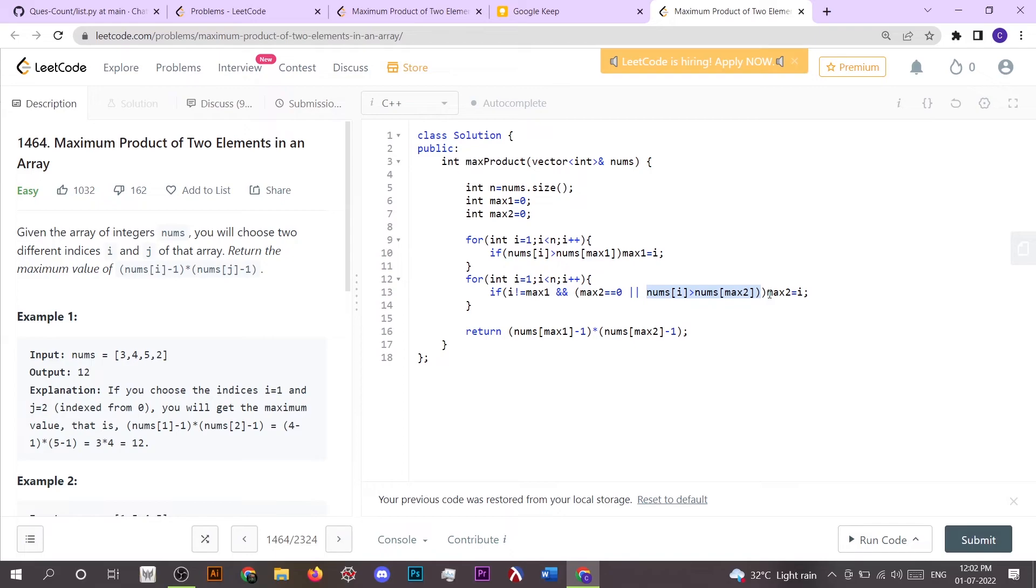If this is the case, or if our nums[i] is greater than nums[max2], we also have to replace it. Since we got the maximum index of the first most maximum number and the second most maximum number, we simply return the answer. Now I'm going to submit this.